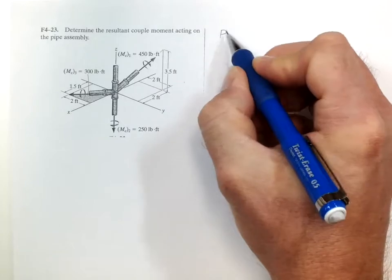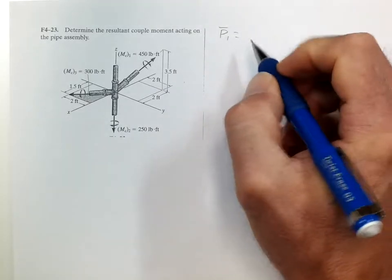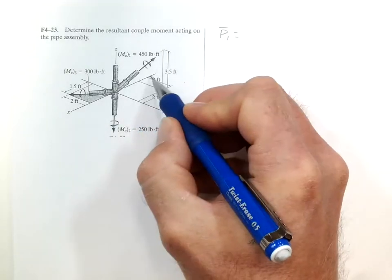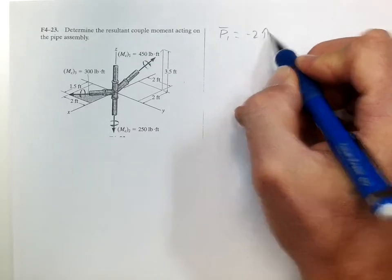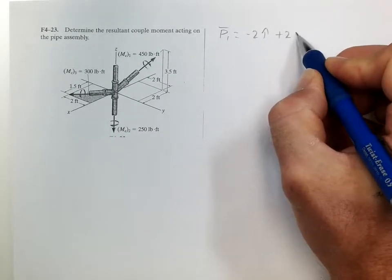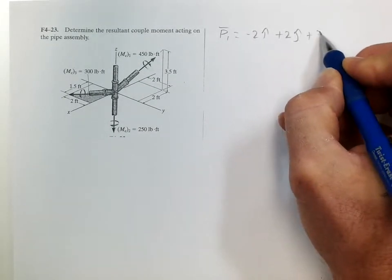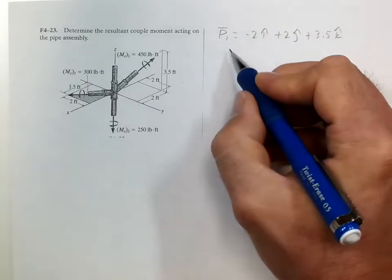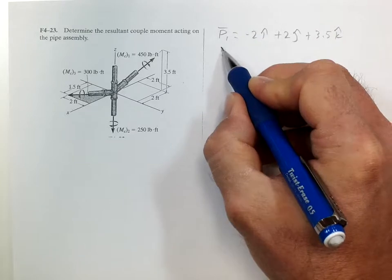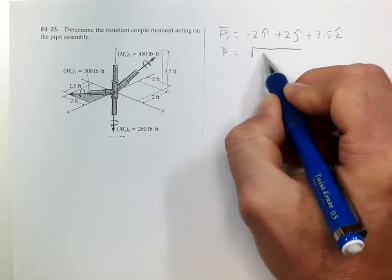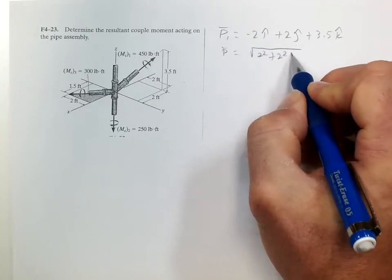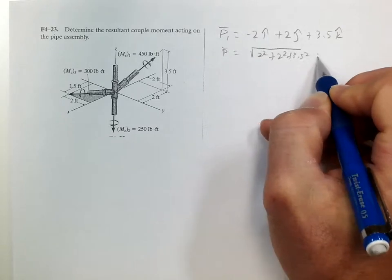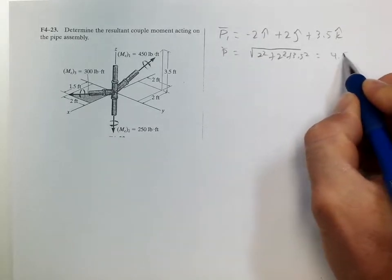So the position vector of one is negative 2 in the x plus 2 in the y and plus 3.5 in the k. So that gives us a position vector of the square root of 2 squared plus 2 squared plus 3.5 squared, which is 4.5.